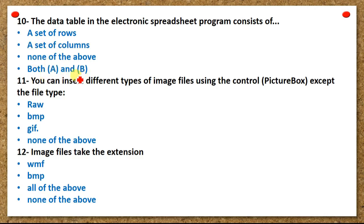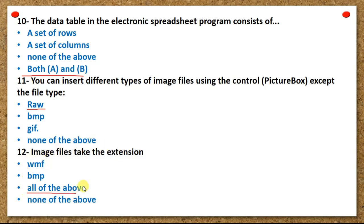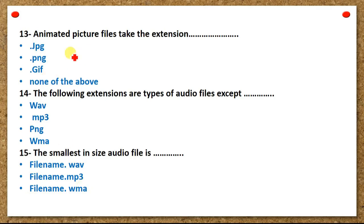Eleven — you can insert different types of image files using the control picture box except the file type: RAW, BMP, GIF, or none of the above. Twelve — image files take the extension: WMF, BMP, all of the above, or none of the above. Thirteen — animated picture files take the extension: PPT, dot GIF, or none of the above.